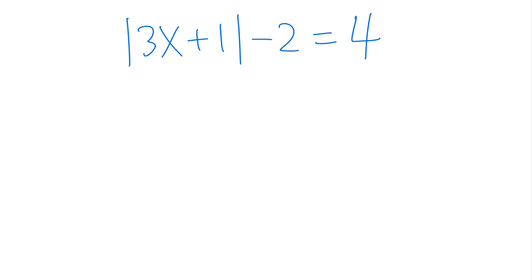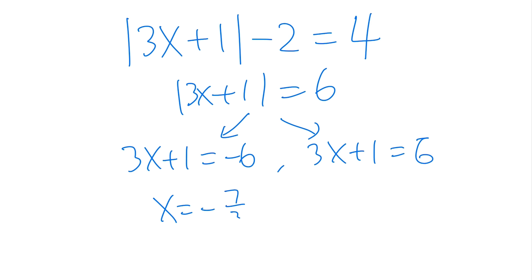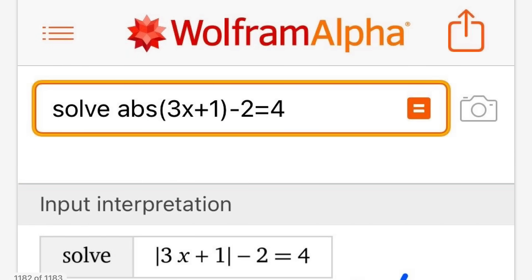I'm a simple guy and I just want to have a simple life, but sometimes Wolfram Alpha really wants to complexify my life. We have this absolute value equation which we can solve pretty easily: first add to both sides, then break it into two equations — 3x + 1 = -6 and 3x + 1 = 6 — giving x = -7/3 and x = 5/3. At first I didn't even want to solve this by hand; I just wanted to put it into Wolfram Alpha.